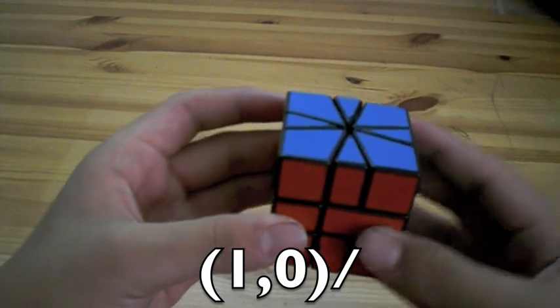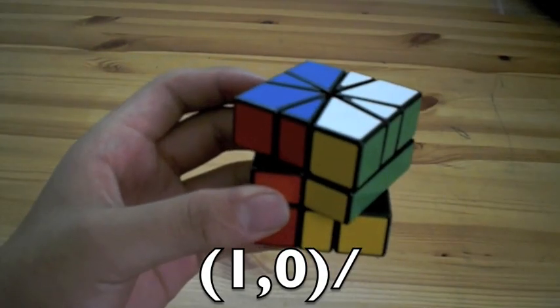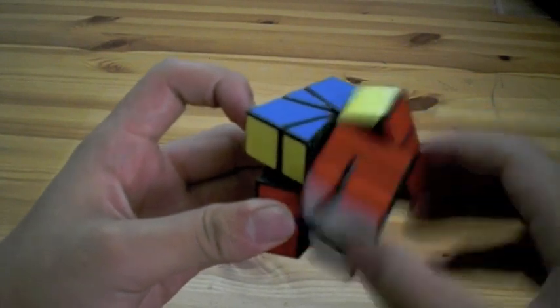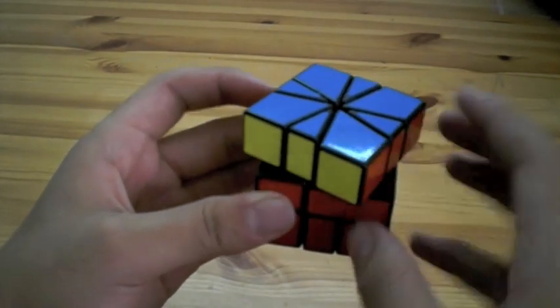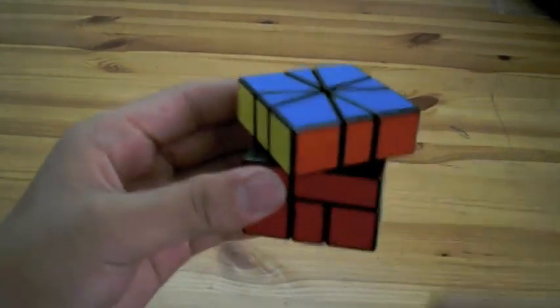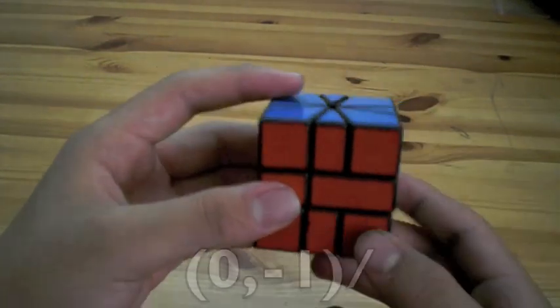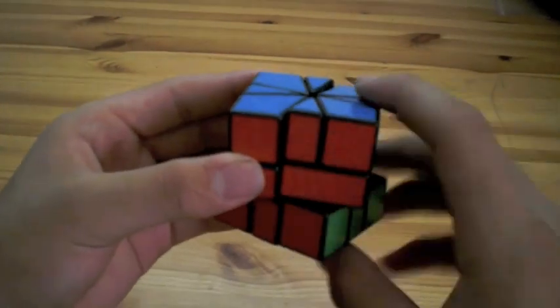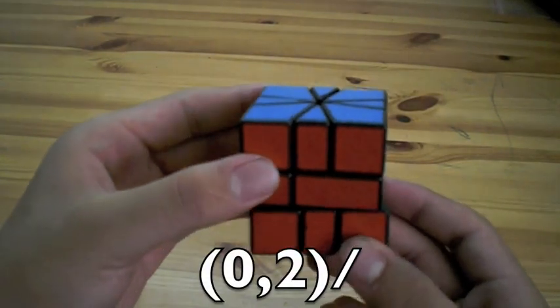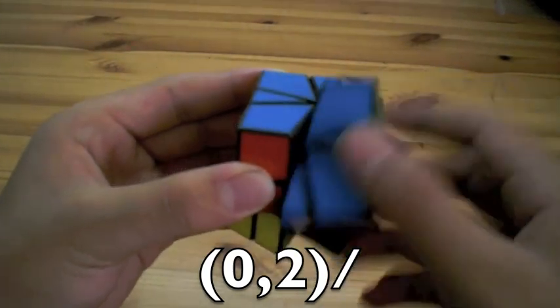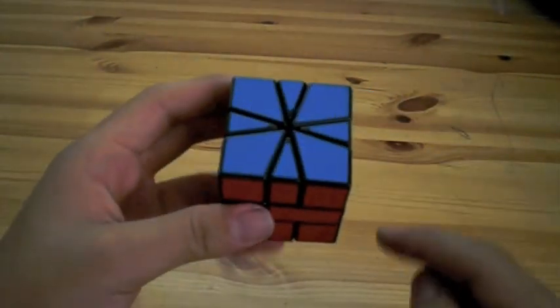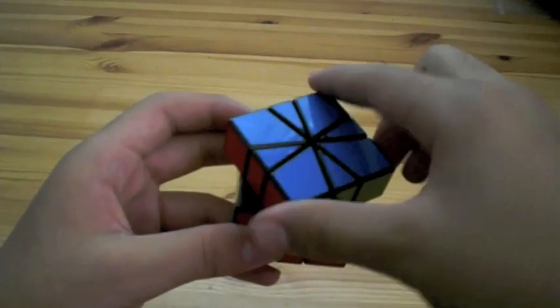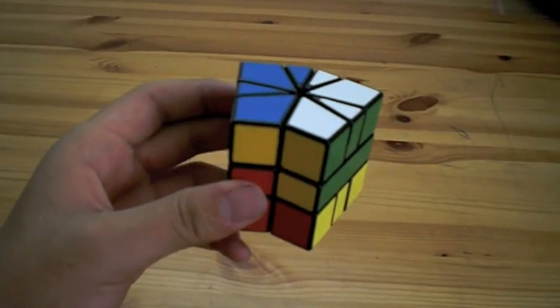So a one comma zero would look like this. A negative two comma zero would look like this, because corners are worth two. You can't do a negative one comma zero from a solved position because you can't turn there. A zero negative one would look like this. A zero two would look like this. And so if you have a number like six, you just have to count one, two, three, four, five, six, and then move this over to this line and then slice the puzzle.